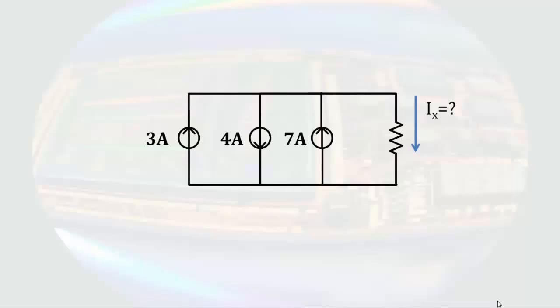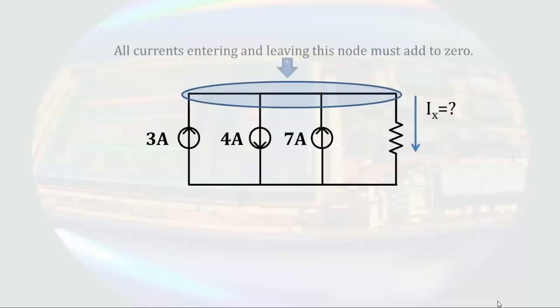Let's apply this to a simple circuit. Here we have an unknown current through a resistor. If we use the top node to apply KCL, I might define currents that enter the node as positive and those that leave the node as negative. So I can say that 3 amps minus 4 amps plus 7 amps minus Ix must equal zero. Then, solving, Ix must be equal to 6 amps.